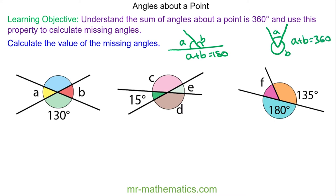We can work out angle a because it lies along a straight line with the 130 degrees, so angle a plus the 130 will equal 180, so angle a must be equal to 50 degrees.